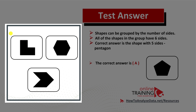If you count the sides — for example, in this shape, you will see that there's one, two, three, four, five, six. Same with the hexagon: one, two, three, four, five, six. And same with the arrow: one, two, three, four, five, six.